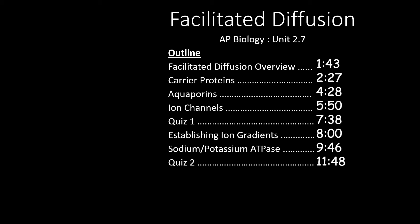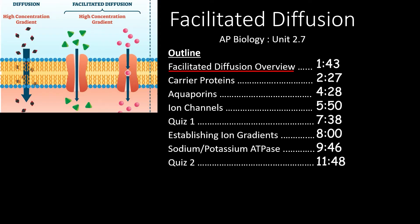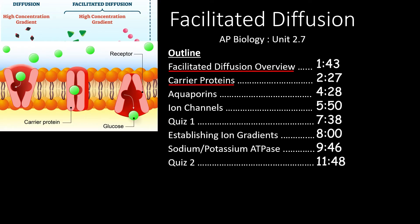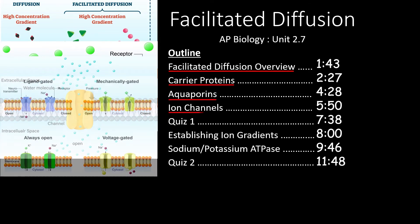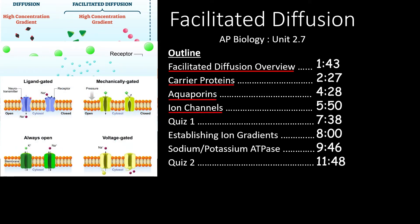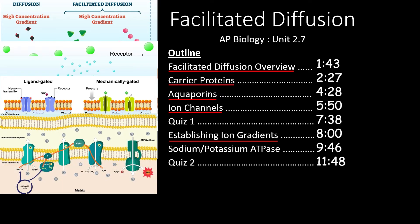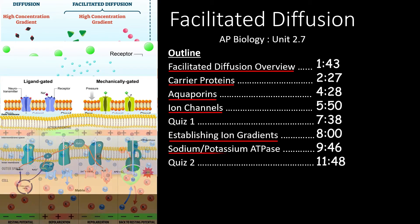This video covers section 2.7 of the AP Biology Curriculum that focuses on facilitated diffusion and how it is used in cells. We'll start by going over the basics of facilitated diffusion, then dive into how carrier proteins function to carry large, polar molecules across cell membranes. We'll also take a look at aquaporins and ion channels, two types of channel proteins that allow the passage of specific substances. After the quiz, we'll see how ion gradients are established, their uses, and examine the sodium-potassium pump.